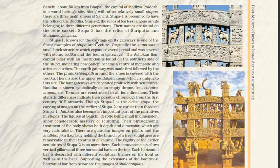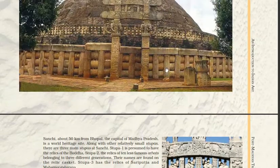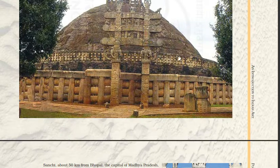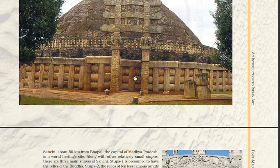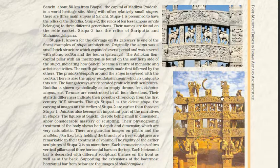The first stupa is known for the carvings on its gateway — one of the finest. Originally the stupa was a small brick structure which expanded over a period and was covered with stone. Here you can see the dome-like structure made of bricks whose beauty was enhanced with the due course of time by different kings, covered with stones, Vedikas, and Toranas.